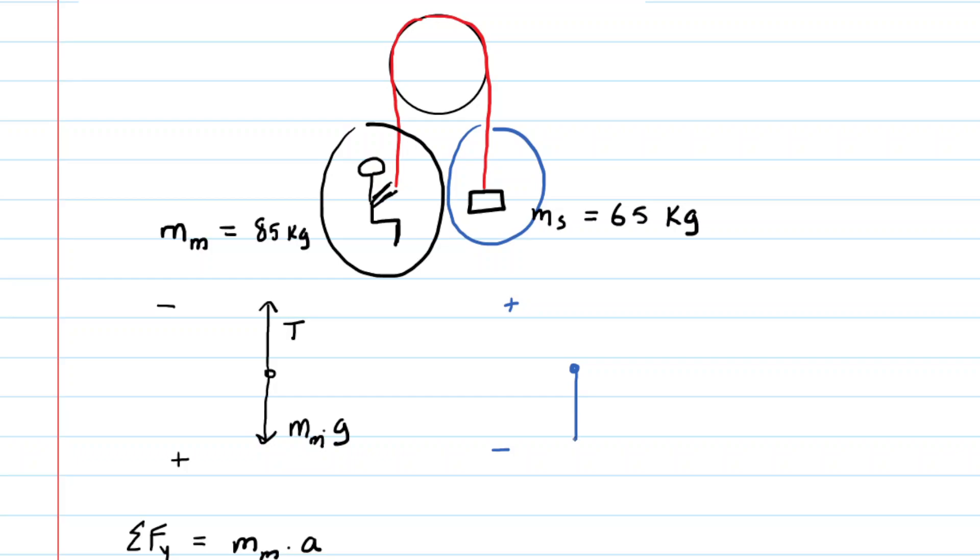And we'll draw the forces now. We have the gravitational force acting on the sandbag. That would be the mass of the sandbag multiplied by g. And then we have the upward tension force. Notice that the tension force is going to be the same, because the man and the sandbag are connected by just this single rope wrapped around the pulley. So we don't need to use a different symbol for the tension. We just need to use T for tension.